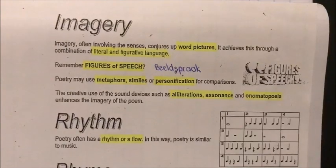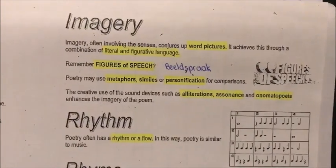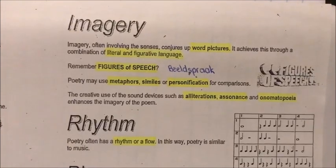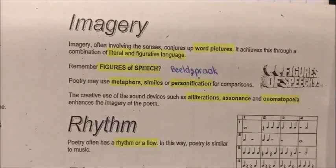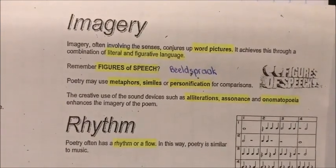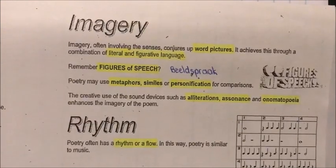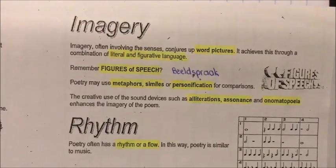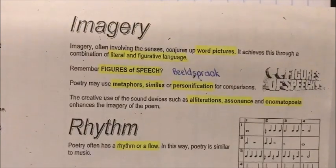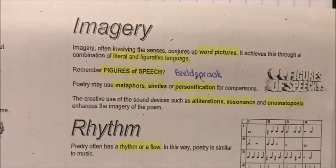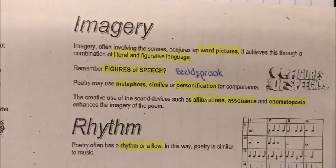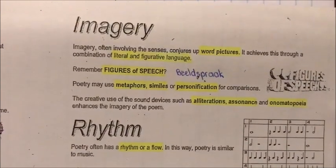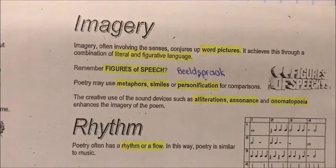Imagery is probably the most important one. Imagery, often involving the senses, conjures up word pictures. It achieves this through a combination of literal and figurative language — letterlike en figuurlike taal. You've already done this in Afrikaans. Figures of speech in Afrikaans is beeldspraak — you can write that on your worksheet.